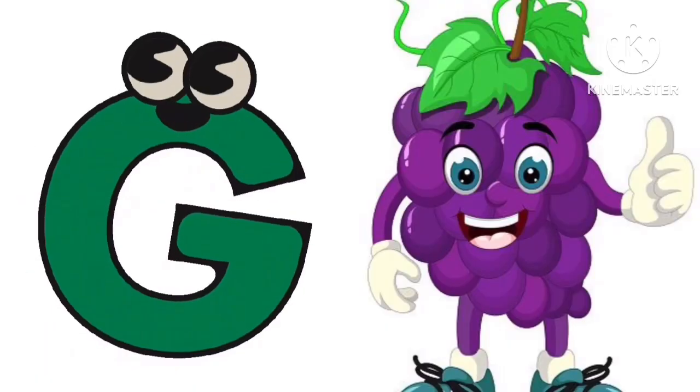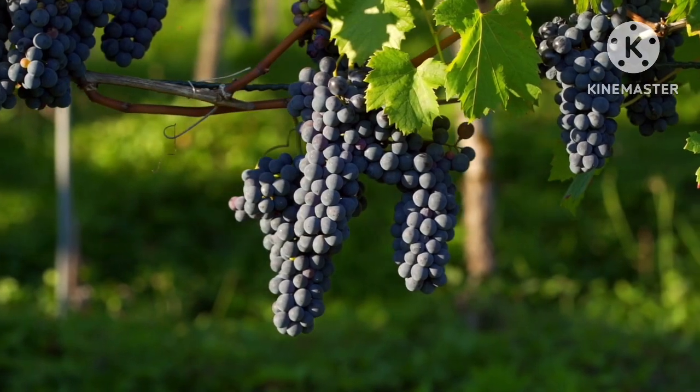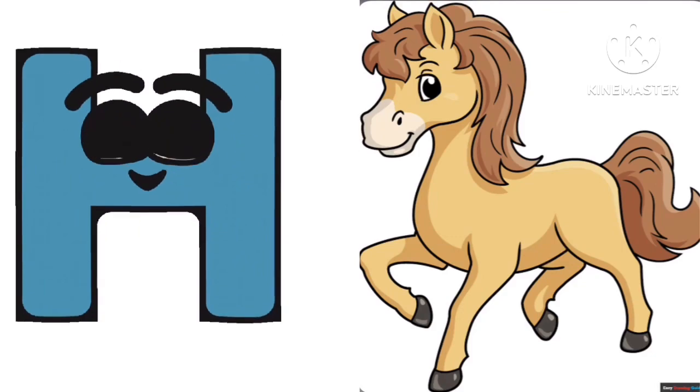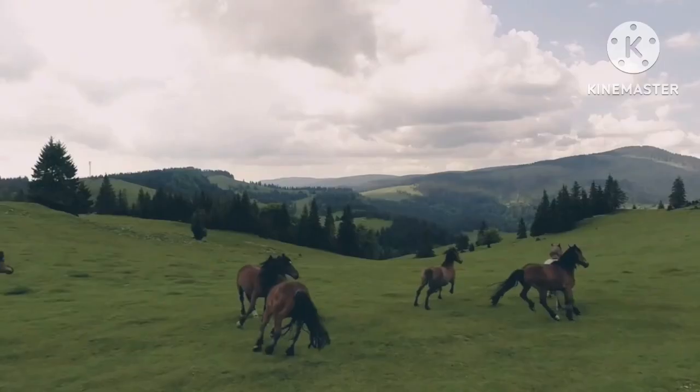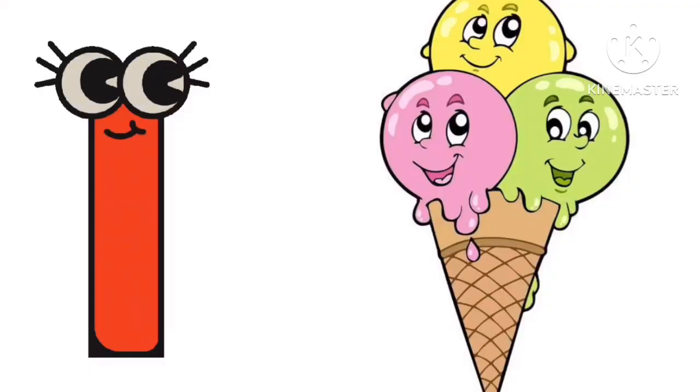G is for Grapes. H is for Horse. I is for Ice Cream.